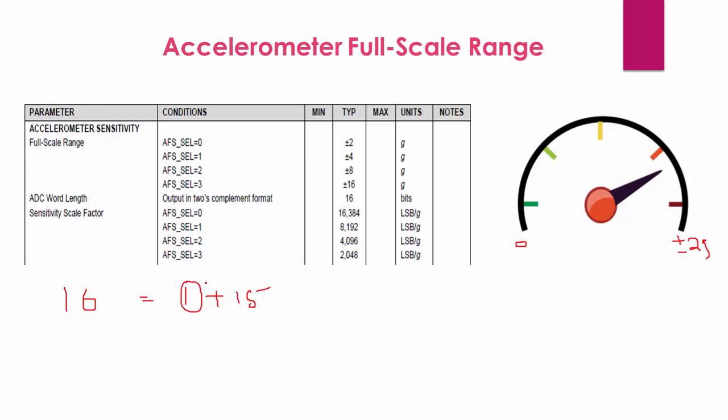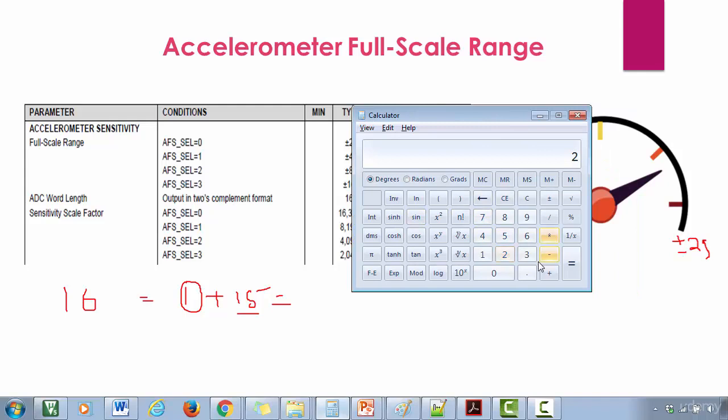That means 1 plus 15. This bit is used to indicate the sign, so that means only 15 bits are left for the data. So the range is 2 to the power 15.